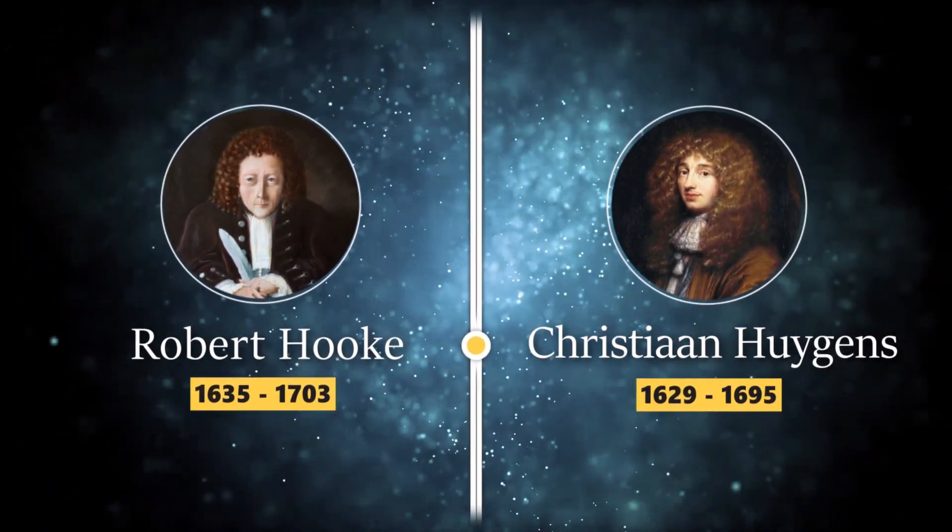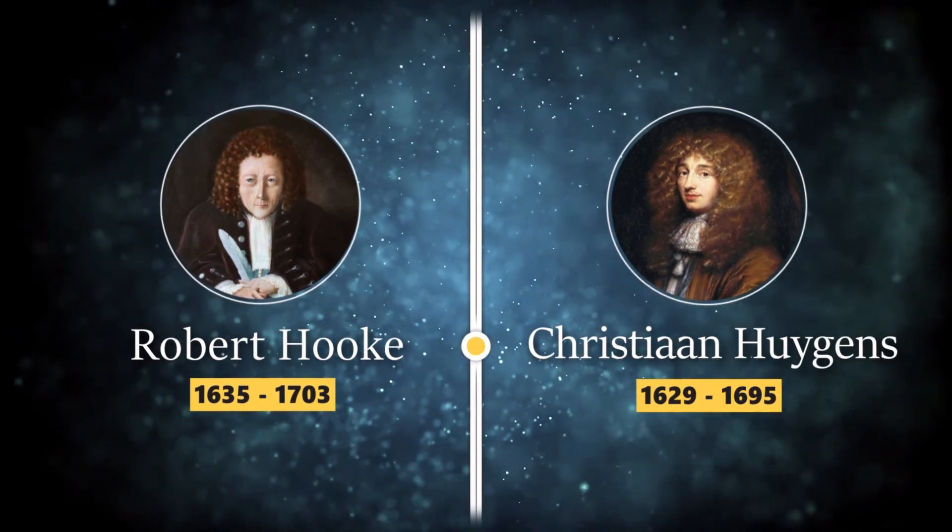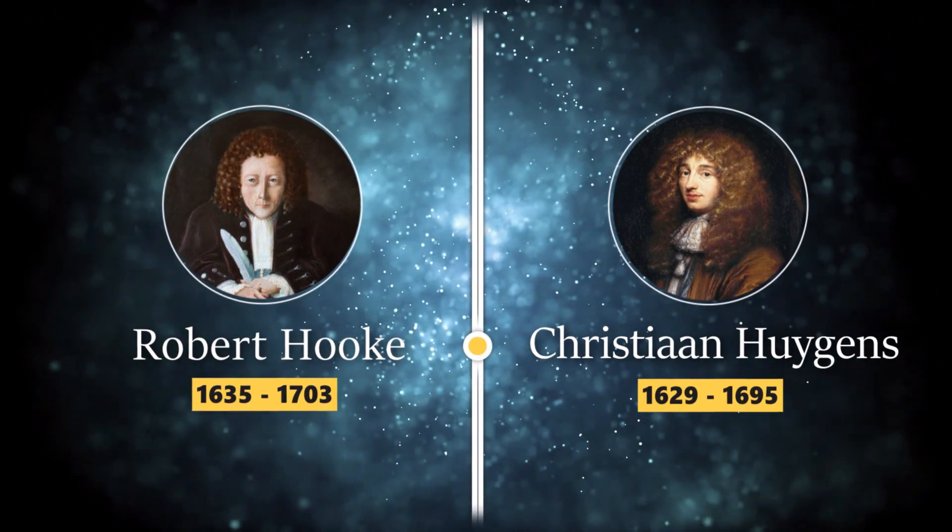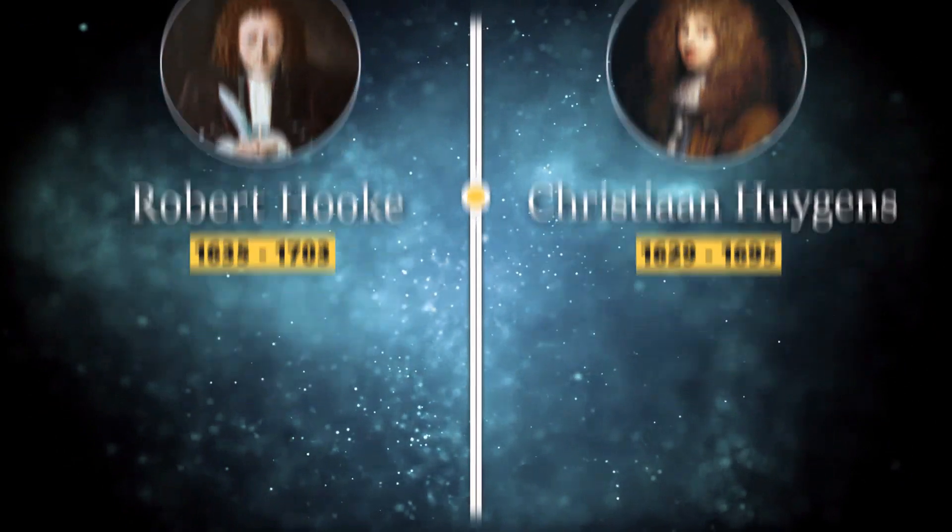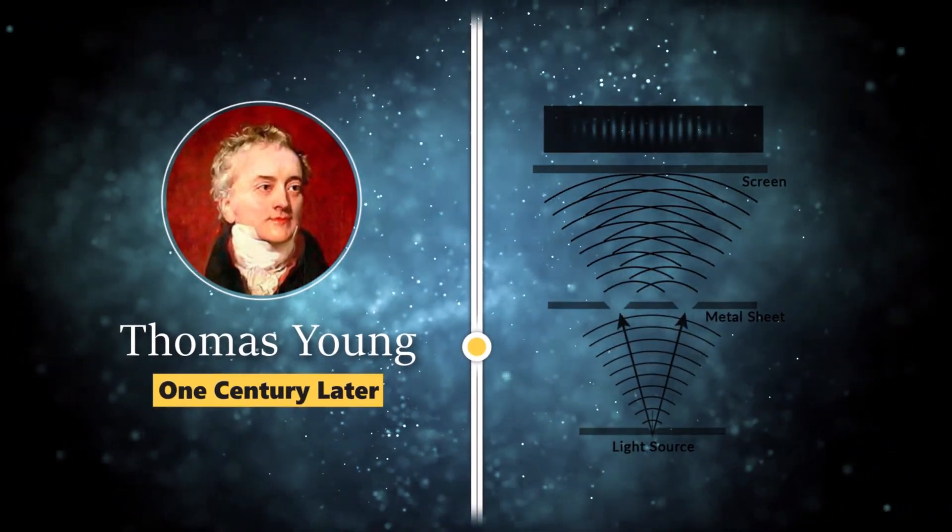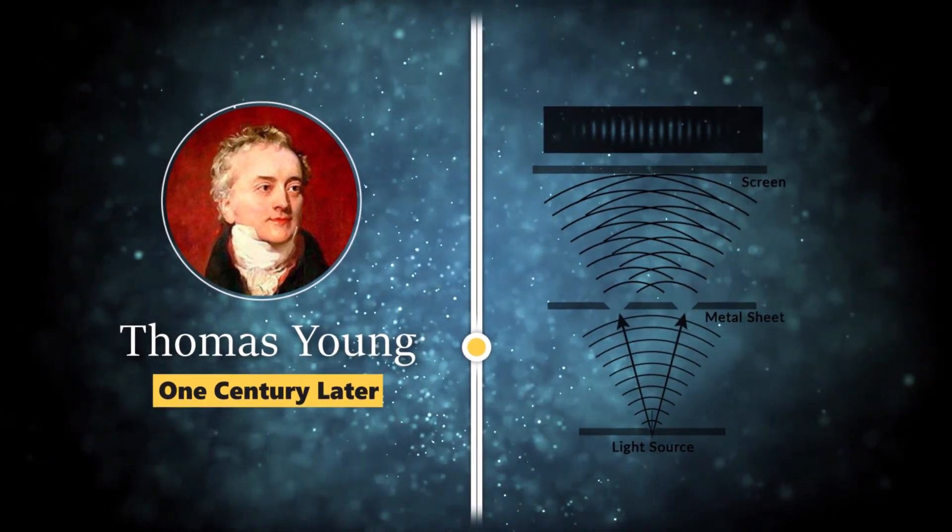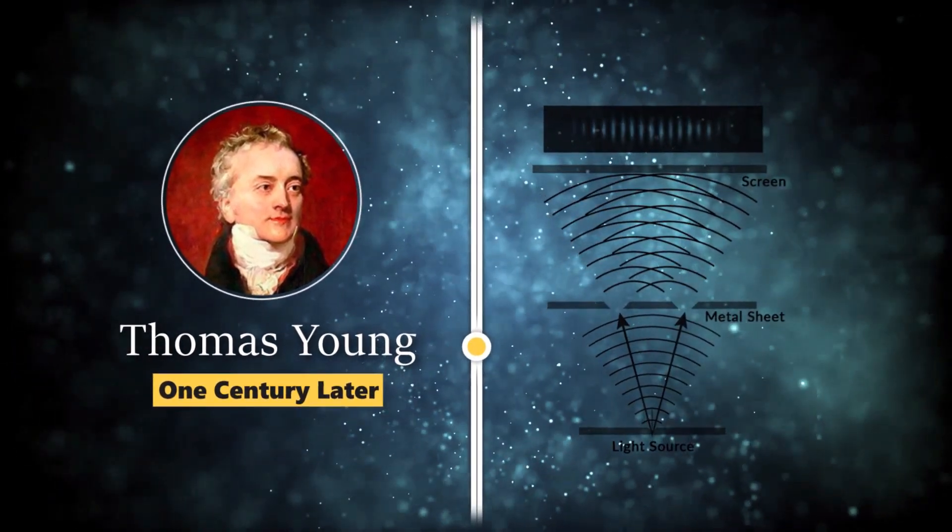Robert Hooke and Christian Huygens are the next most famous scientists that believe in the wave theory of light. After about one century, the double slit experiment of Thomas Young derived evidence that could be explained only if we know the light as a wave.